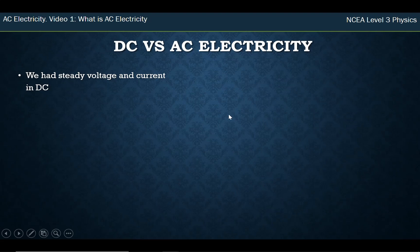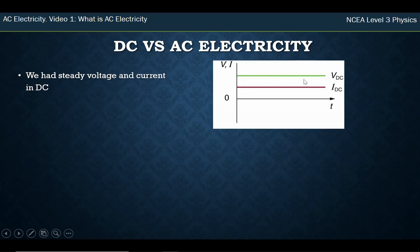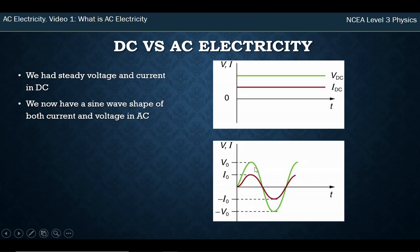So previously when we had DC electricity we had usually a steady current and a steady voltage. Now with AC electricity when you saw it going back and forth and back and forth we have a sine wave that goes positive and negative and it will keep going positive and negative, positive and negative and we describe this as sinusoidal. Sinusoidal is the word to describe something that can be described by a sine wave.